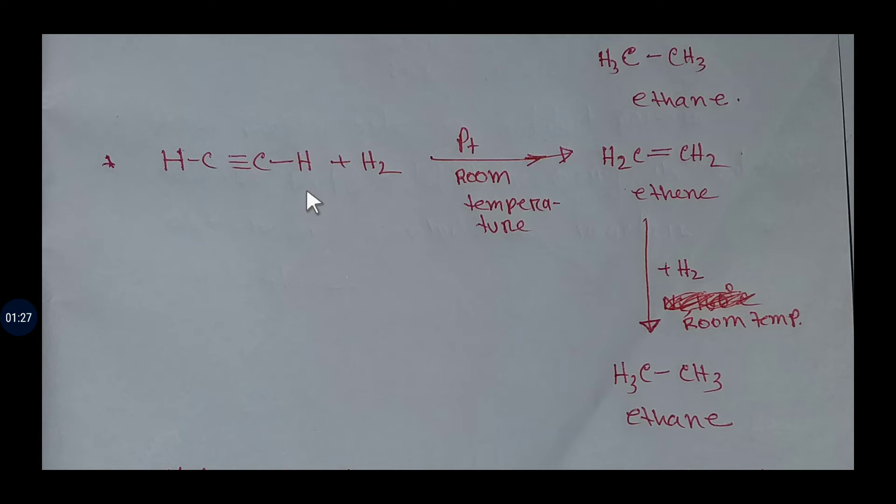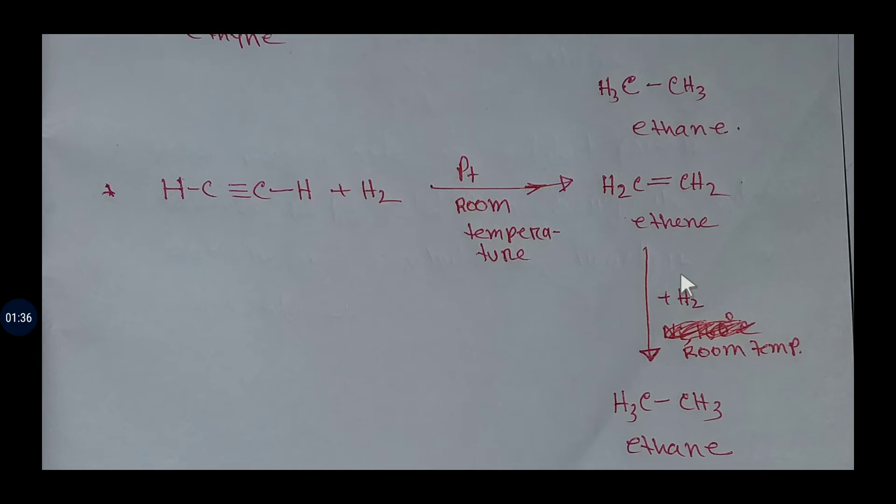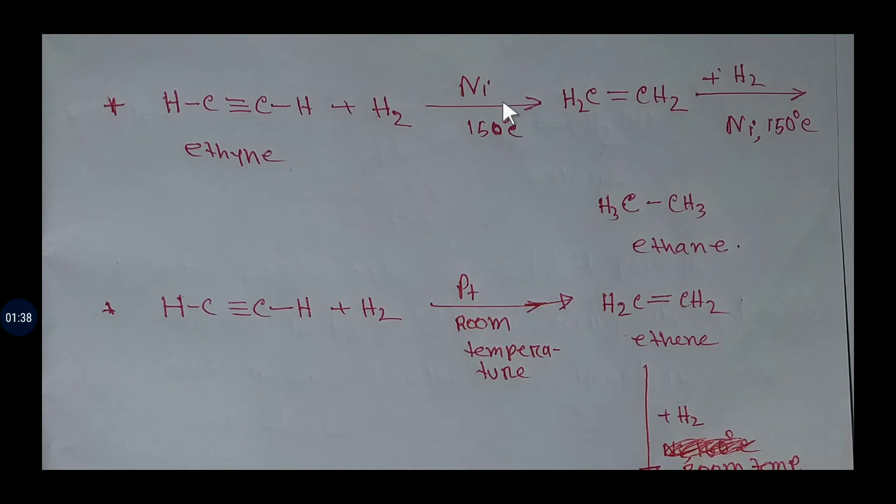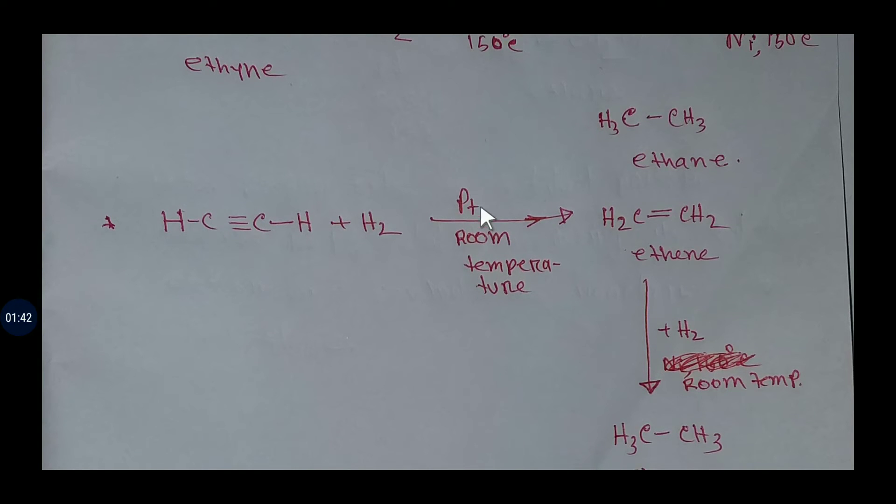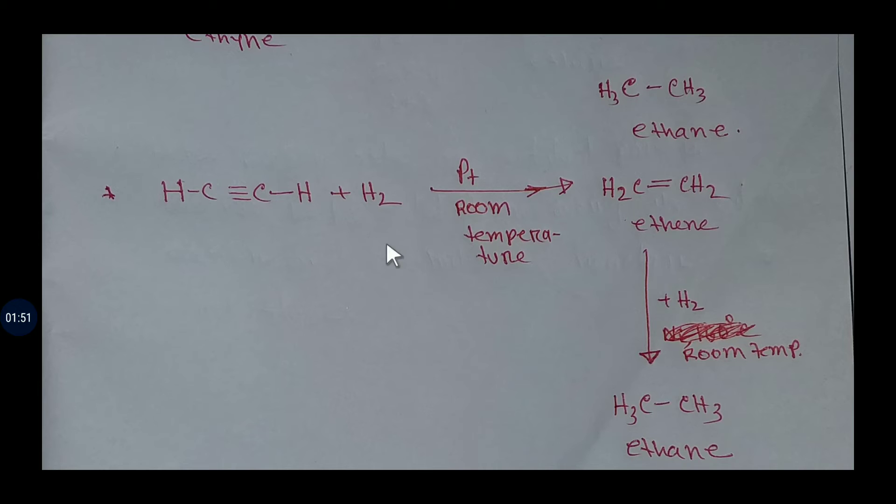So, for complete hydrogenation of ethyne, we have to add two molecules of hydrogen. In presence of nickel, we have to use 150 degree Celsius temperature, but in the presence of platinum or palladium catalyst, we will just use room temperature to convert ethyne to ethane.